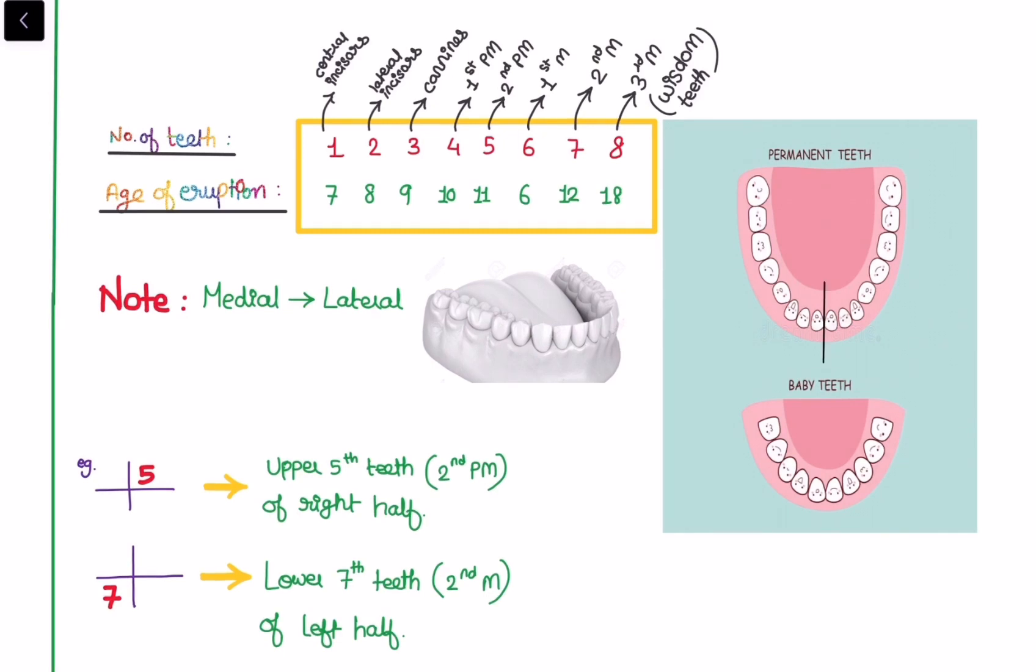Here is the diagram that shows the counting from the medial to lateral side, that is from mid central incisor to the last wisdom teeth. The number of teeth are 1, 2, 3, 4, 5, 6, 7, 8 and the age of eruption you need to remember as 7, 8, 9, 10, 11, 6, 12, 18. You need to remember this by heart.